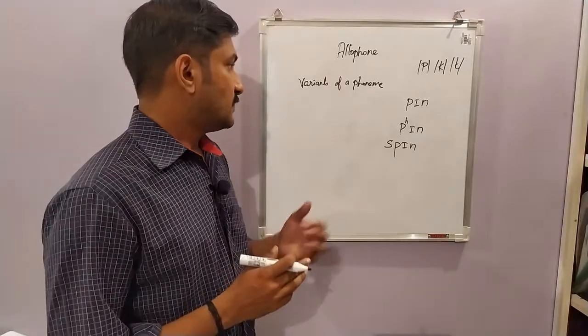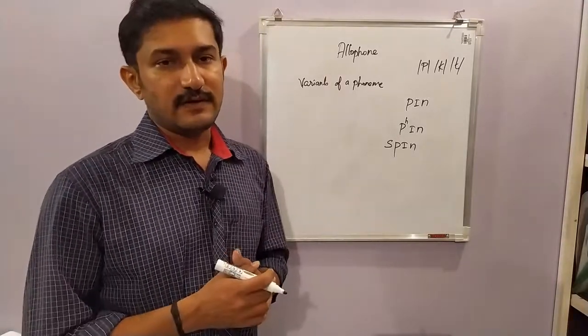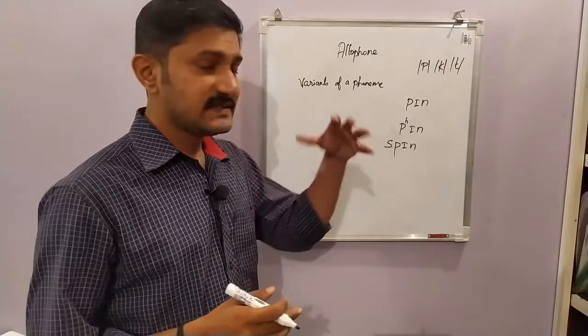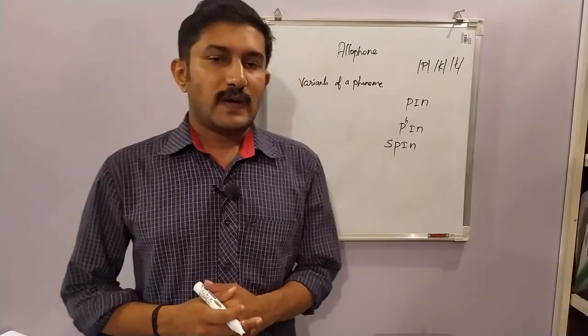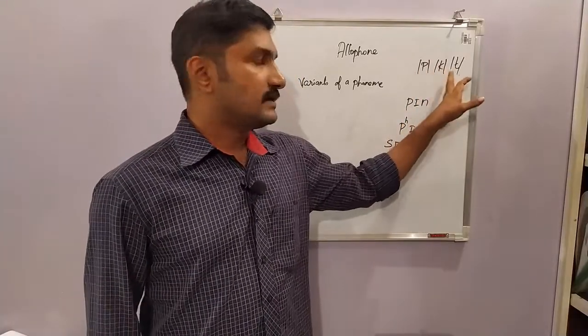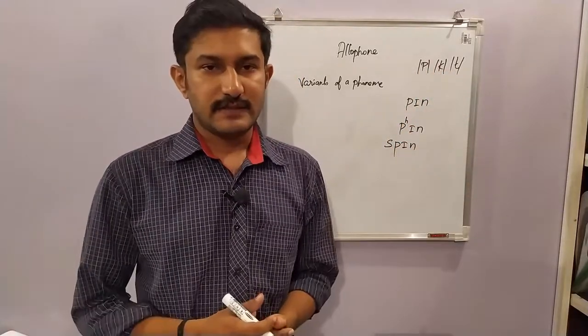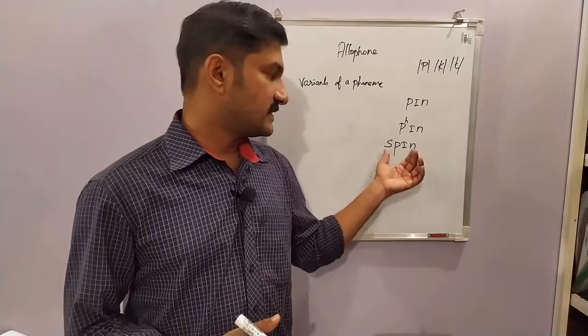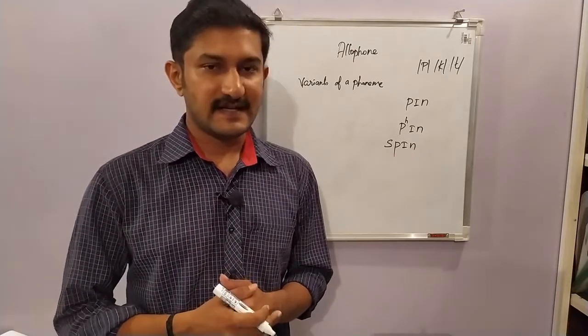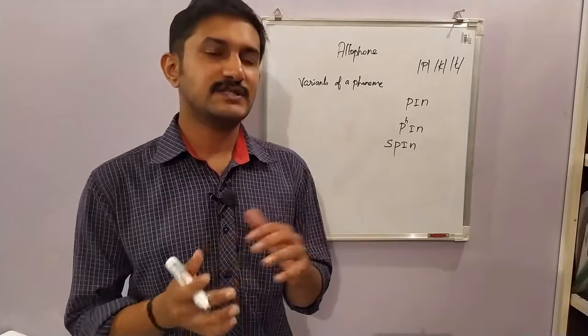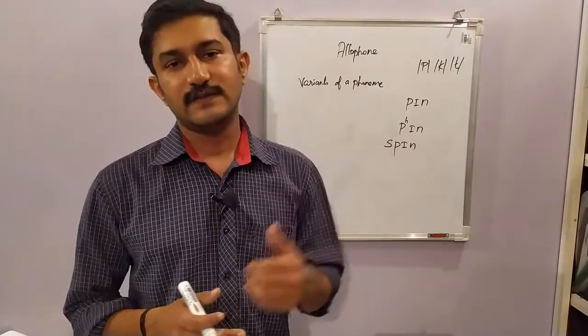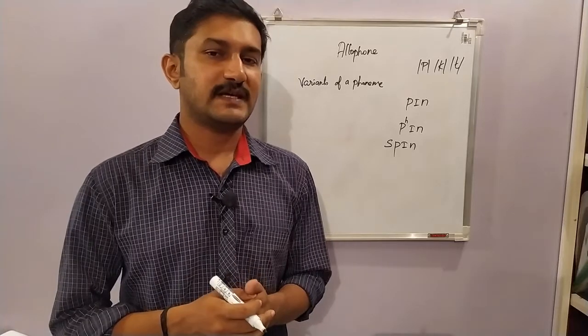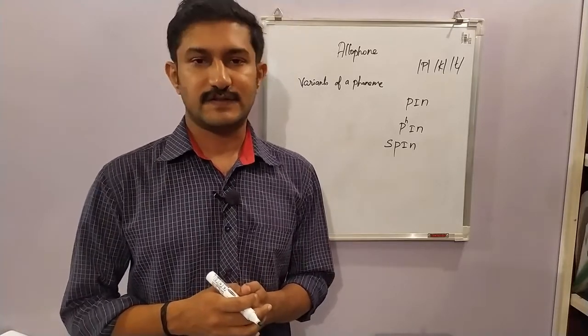Aspirated /p/, /t/, and /k/ occur initially. If occurring after /s/ or some other sound, they remain unaspirated. Such positional variants of a phoneme are referred to as allophones. Allophones are phonetically similar but phonemically different.